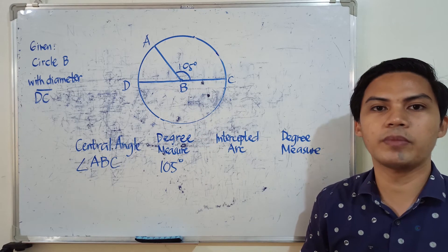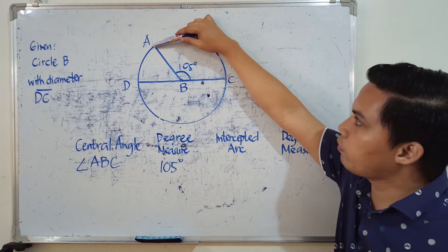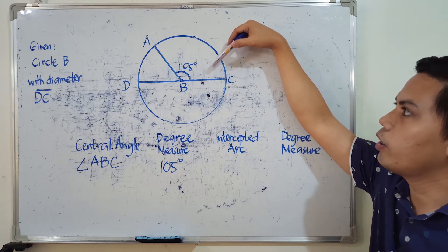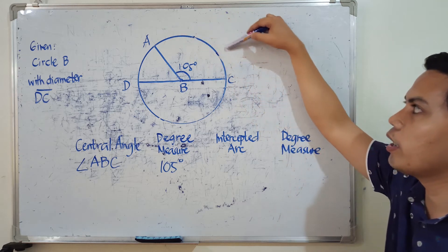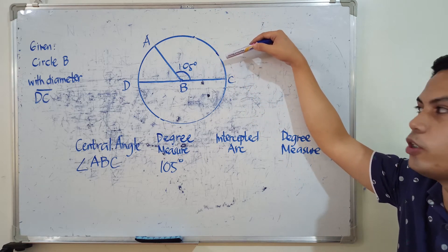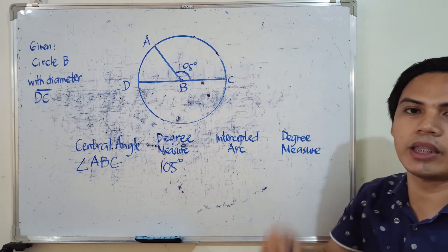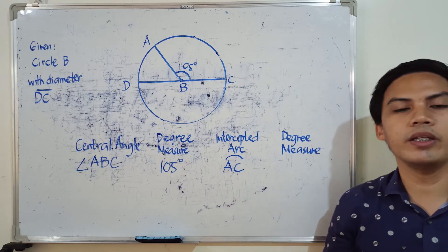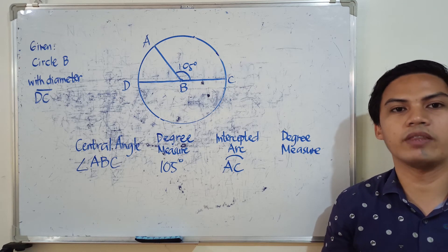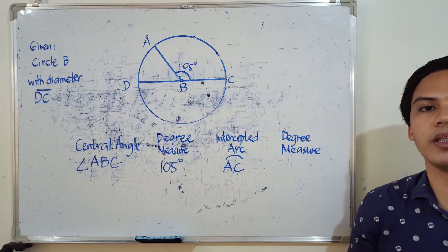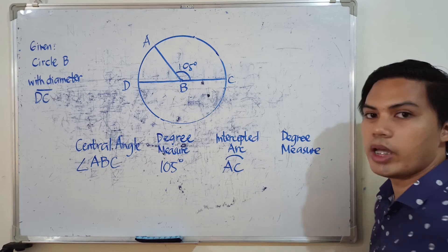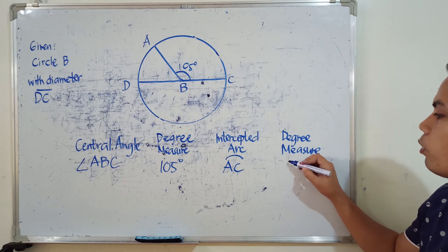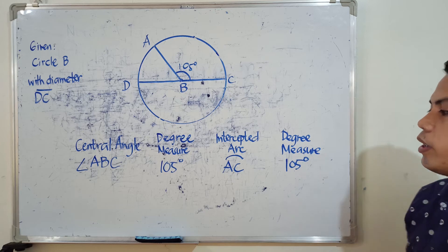For central angle ABC, the intercepted arc is the arc whose endpoints are on the two sides of the angle — that is arc AC. Based on our theorem, the degree measurement of the central angle equals its intercepted arc. Since the central angle ABC is 105 degrees, it follows that the degree measurement of intercepted arc AC is also 105 degrees.